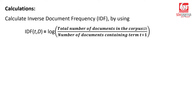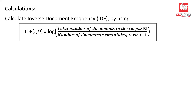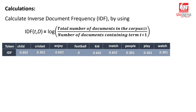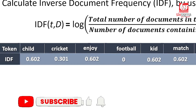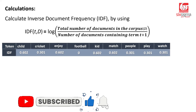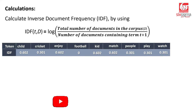Now let's calculate inverse document frequency. The formula is the log of total number of documents — which is four — divided by the number of documents that contain the word. Whether a document contains a word or not is what matters, not how many times. The word 'child' is present in only one document, so IDF = log(4/1) = log 4 = 0.602. Cricket appears in two documents, so IDF = log(4/2) = log 2 = 0.301. IDF is the same value for each term across all documents — it's one value per term for the entire collection.